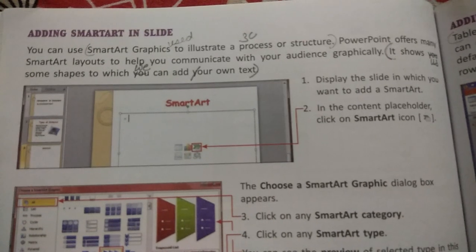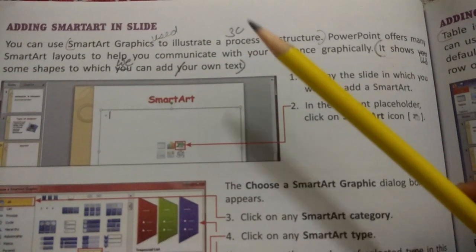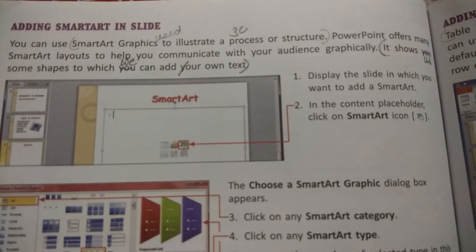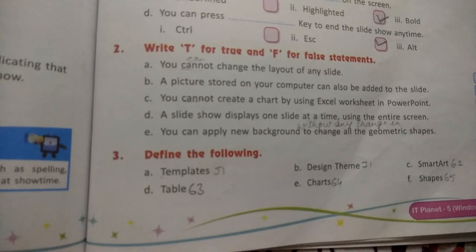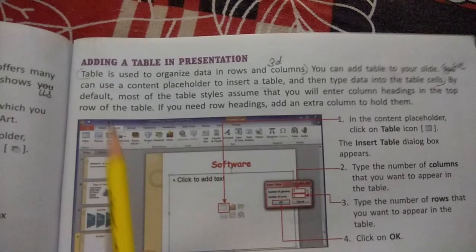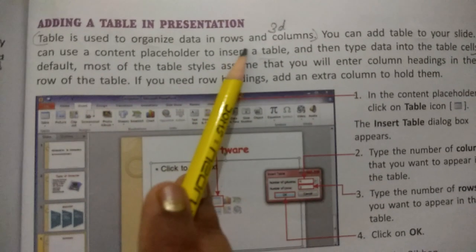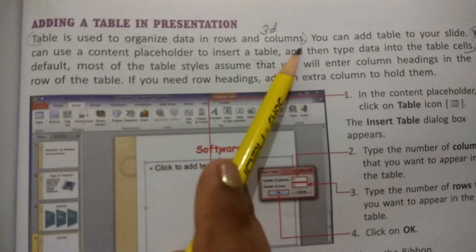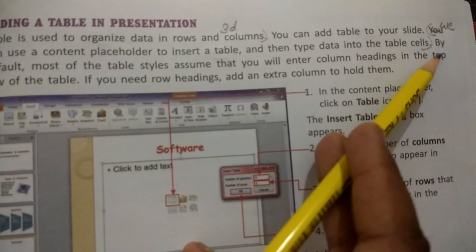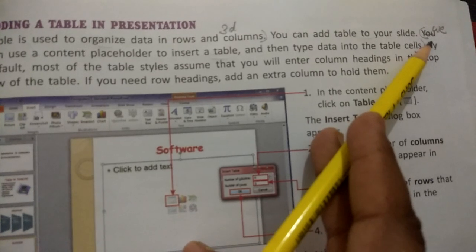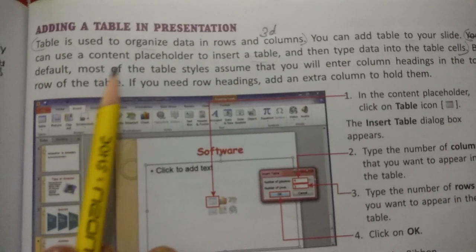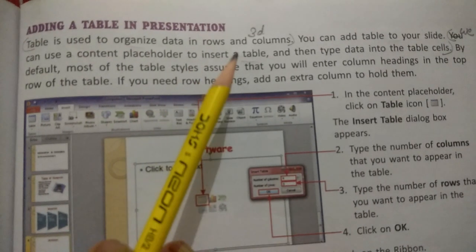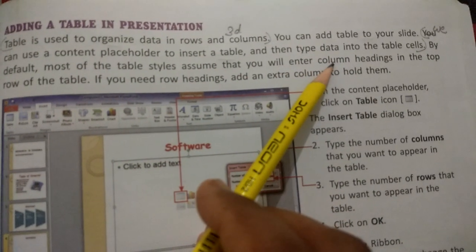For the answer, take out page number 63. Table is used to organize data in rows and columns. Cut 'you' and write 'we'. We can use a content placeholder to insert a table and then type data into the table cells. Write down answer number 3D.